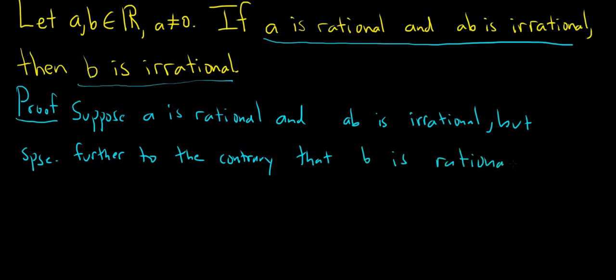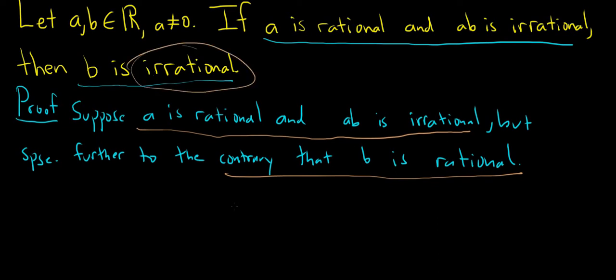So if we reach something silly, we've completed the proof and therefore B must be irrational. So we assume this piece here and then the proof by contradiction comes into play by supposing to the contrary that B is rational. We're supposing it's not irrational, therefore must be rational.